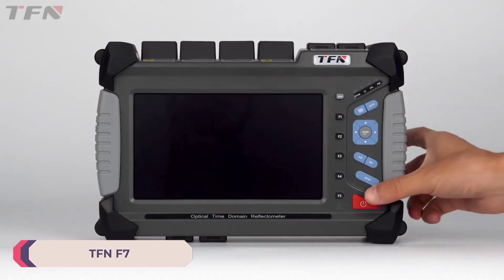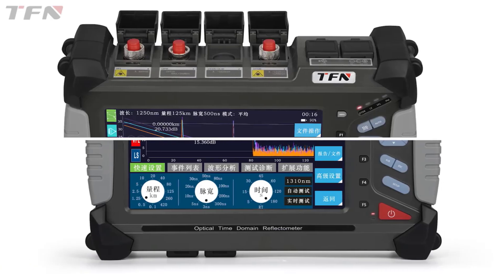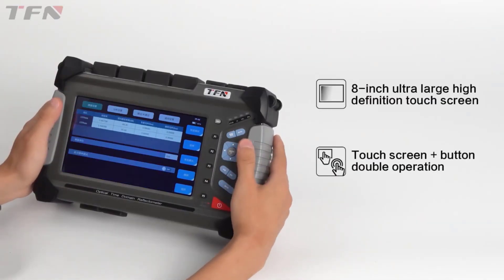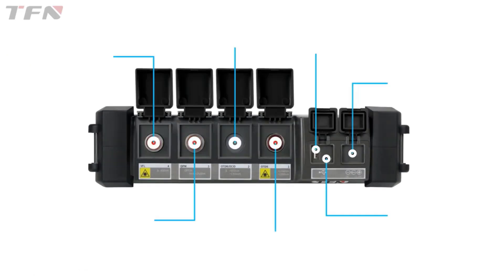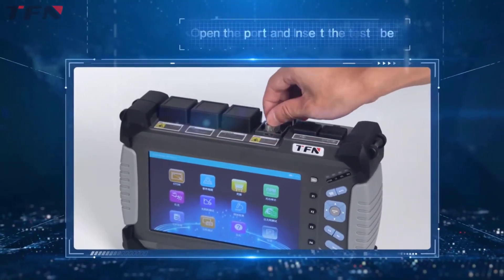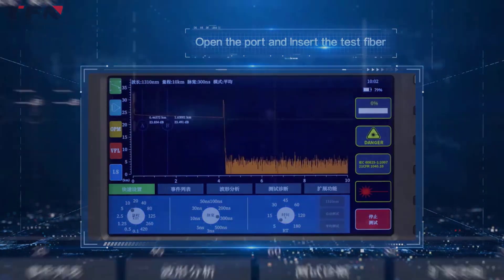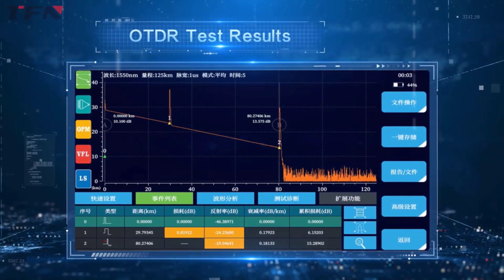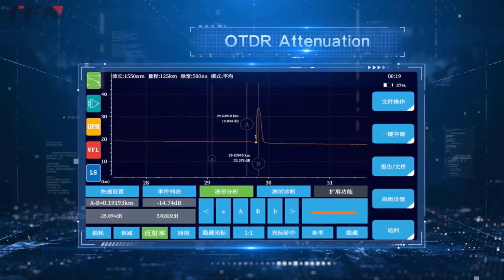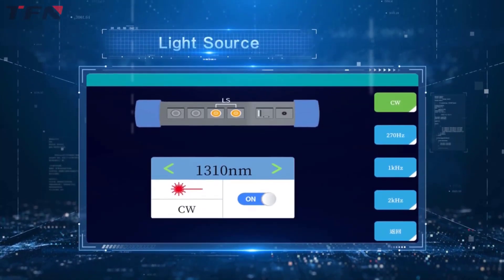Number 1: TFN-F7 OTDR Fiber Optic Tester. The TFN-F7 is a versatile and efficient tool for testing and analyzing fiber optic networks. With its compact design and comprehensive features, it's an essential instrument for telecom engineers, network technicians, and anyone involved in maintaining or installing fiber optic infrastructure. Its impressive measuring distance capability reaches up to 240 kilometers, ensuring users can accurately assess long-haul fiber optic links without additional equipment. Whether working on local networks or spanning vast distances, the TFN-F7 has you covered. Thanks for watching.